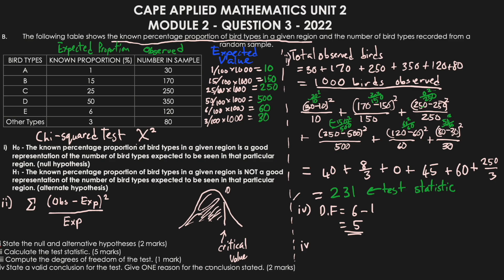To state a valid conclusion, we typically determine a critical value using the degrees of freedom and level of significance from a chi-square table. If the test statistic is less than the critical value, we accept the null hypothesis. If it is greater, we accept the alternate hypothesis. Although no significance level was given here, we can still make a decision — I would reject the null hypothesis in favor of the alternate hypothesis.